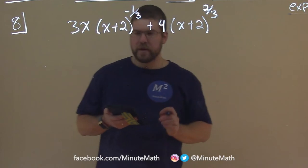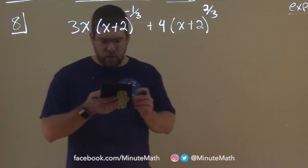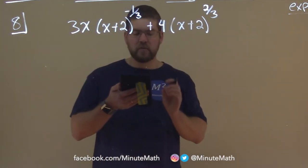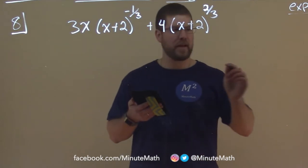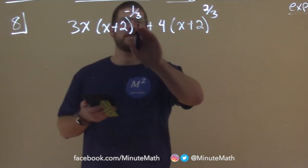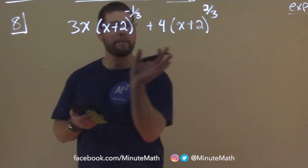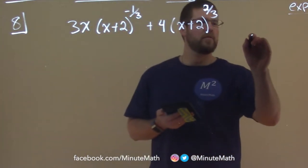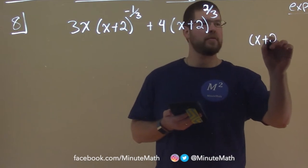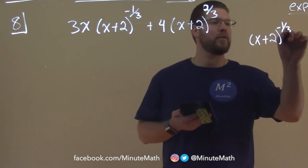So this is a little tricky. We first want to start with the term with the lowest value in the exponent, and that term here, we see the lowest value in the exponent is negative 1/3, and we see it's in both parts, so we know we can pull that out. So we have our lowest term is (x+2) to the negative 1/3 power.